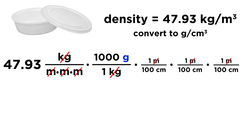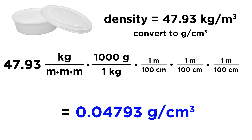Now we have grams and centimeters cubed — grams per cubic centimeter — which is what we want. We plug the numbers into the calculator: 47.93 times 1,000, then divide by 100 three times. That gives us 0.04793 grams per cubic centimeter. None of these conversion factors change the number of sig figs — 1,000 and 100 are all exact conversions — so we keep the four sig figs from the initial value. That is why our answer has four sig figs, and that is the answer to this problem.